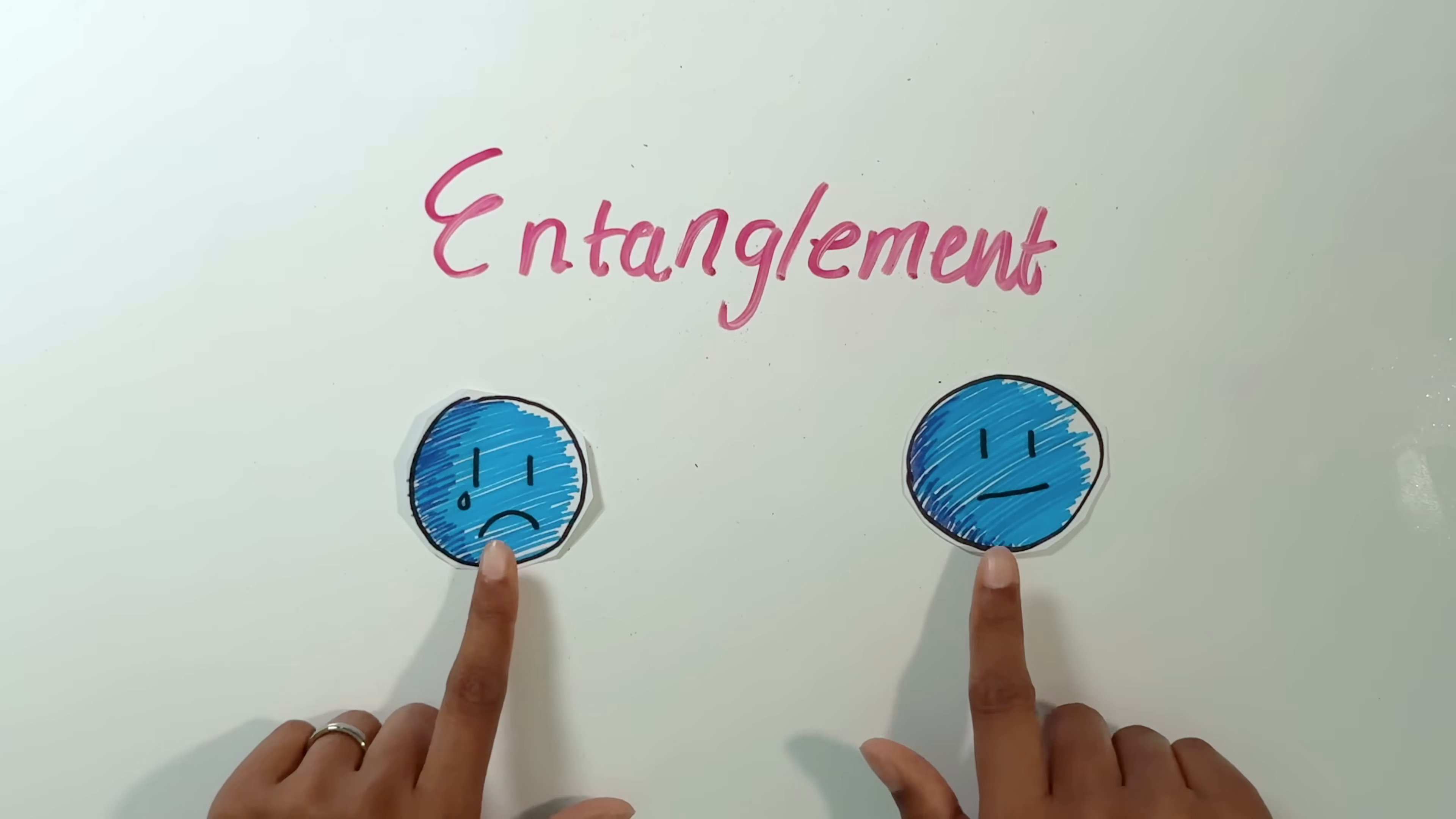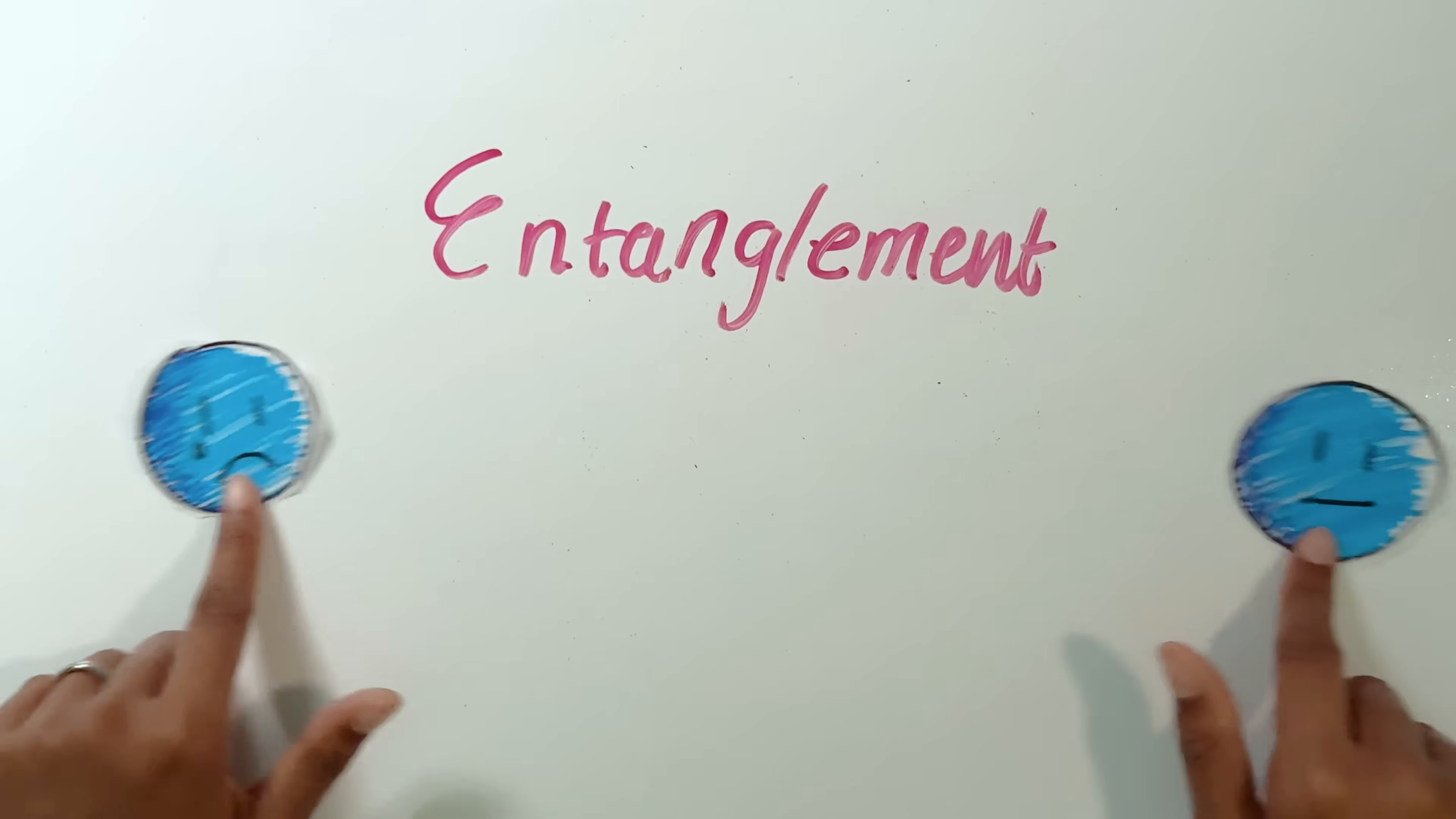Entanglement is a phenomena involving more than one quantum object, and it is about the relationship between those two objects. Now typically people will say stuff like entanglement means that these two objects can communicate to each other no matter how far apart they are, but it's not really that.